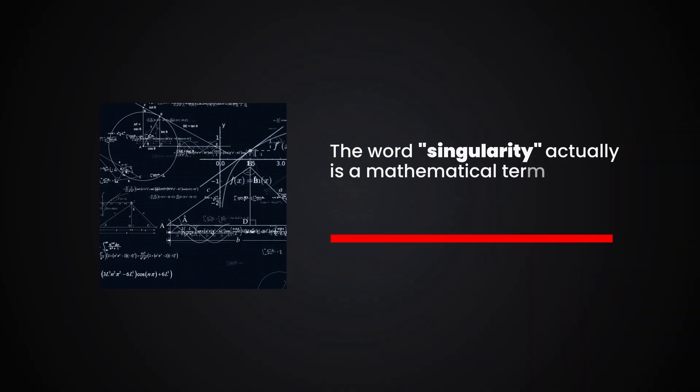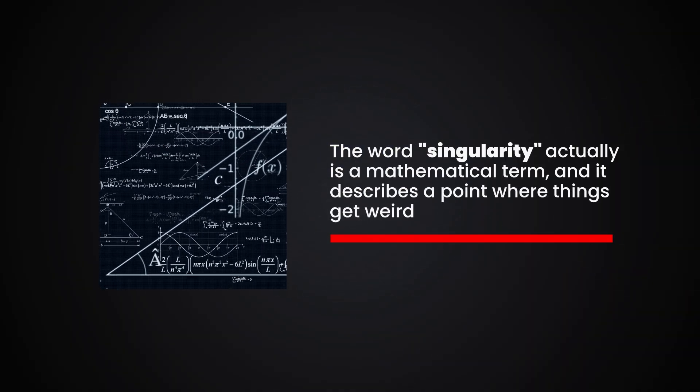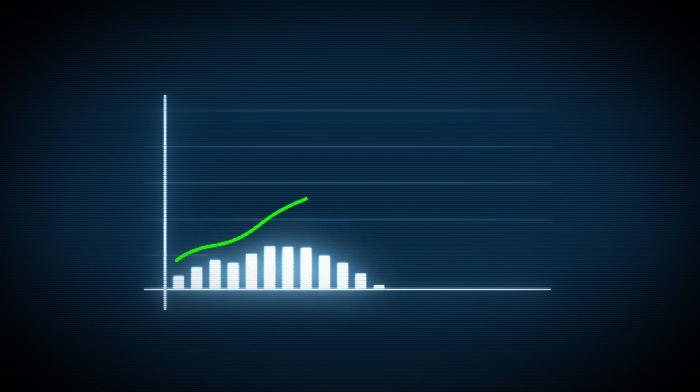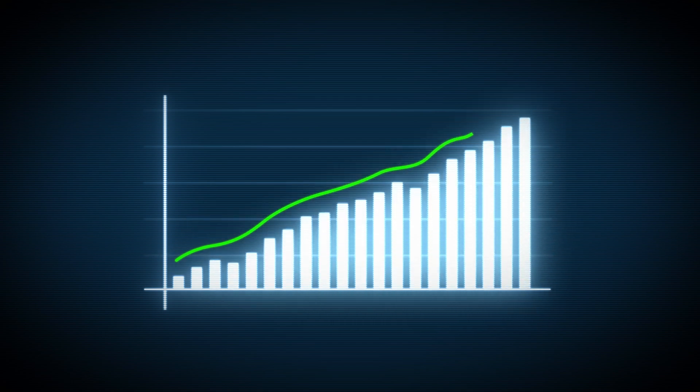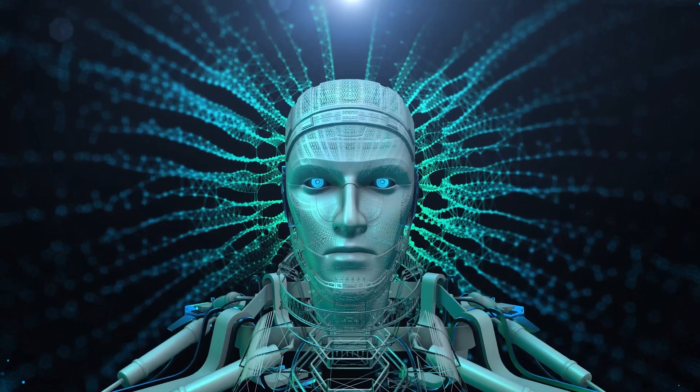The word singularity actually is a mathematical term, and it describes a point where things get weird. Let's take a graph for instance. Normally the line goes up and down in predictable ways. But at a singularity, the line just shoots off the chart, behaving in a way that we can't quite explain. That's kind of the idea behind the technological singularity with AI.